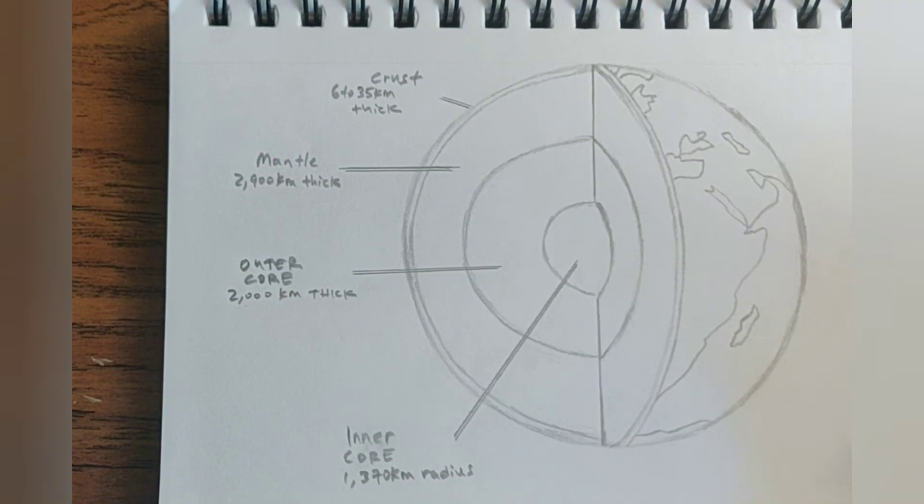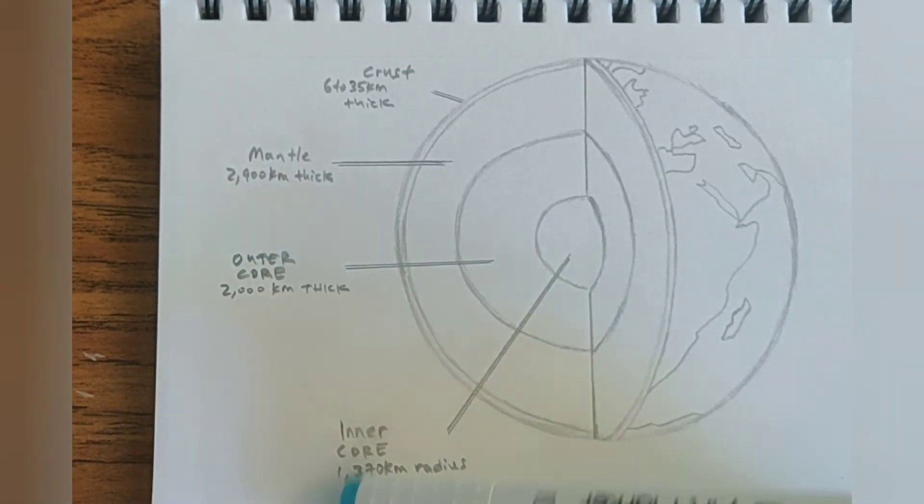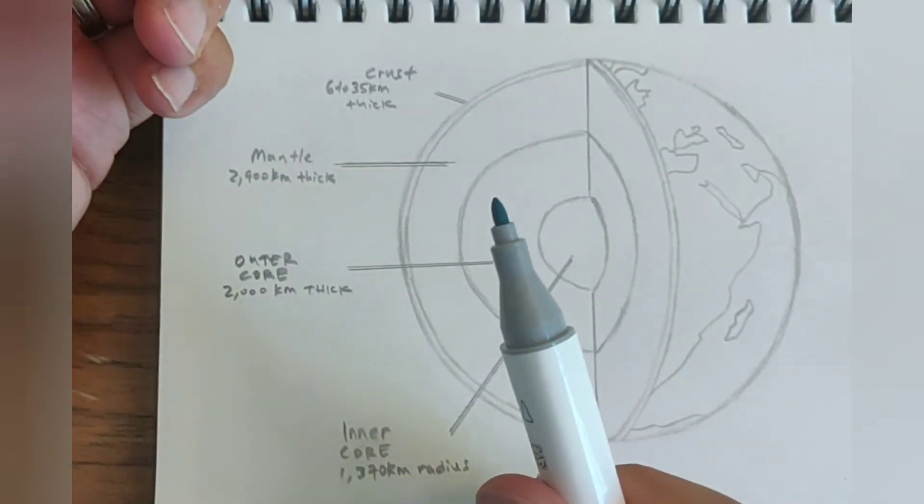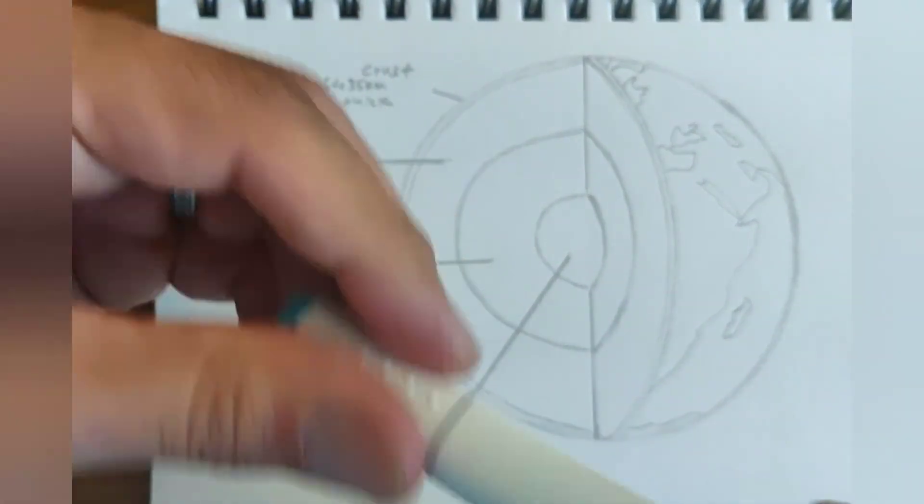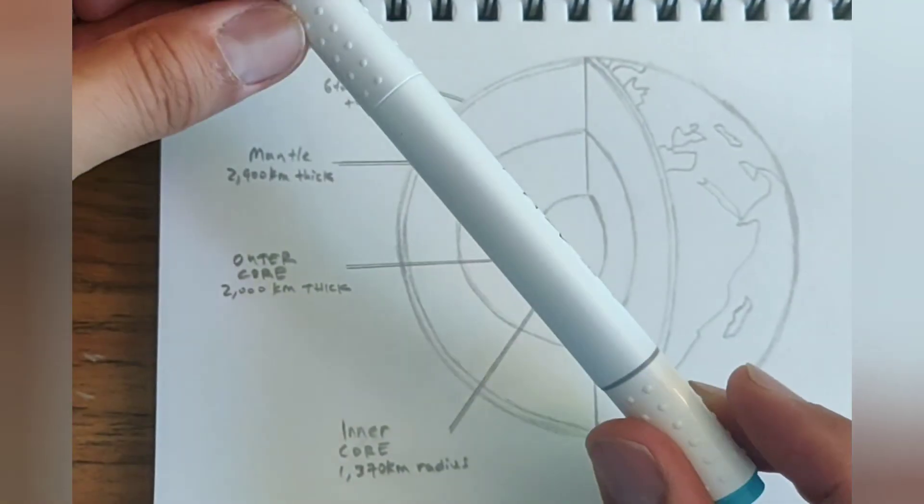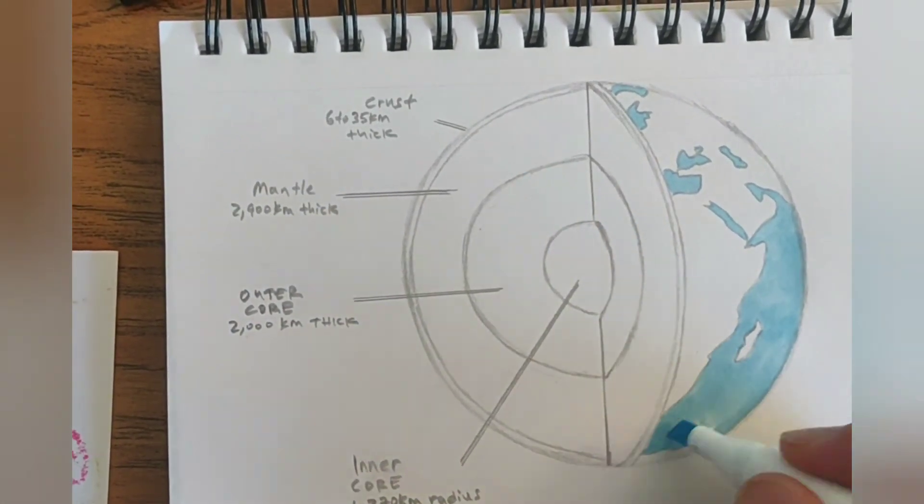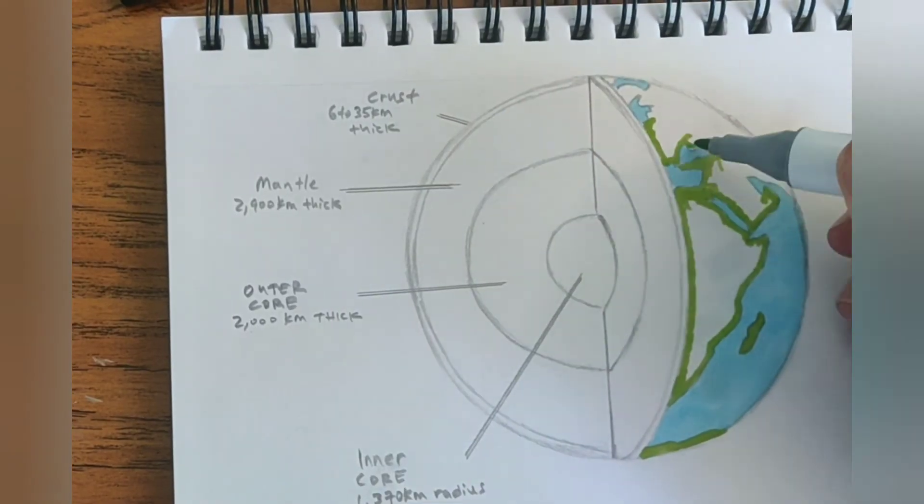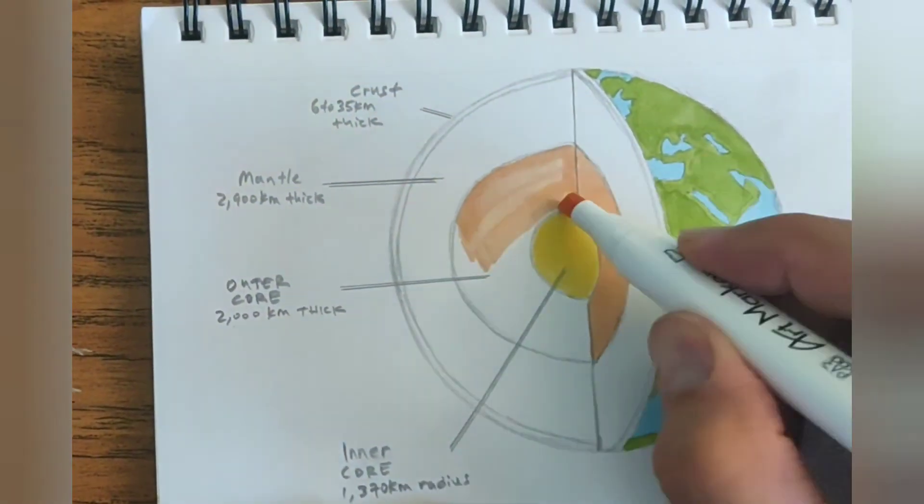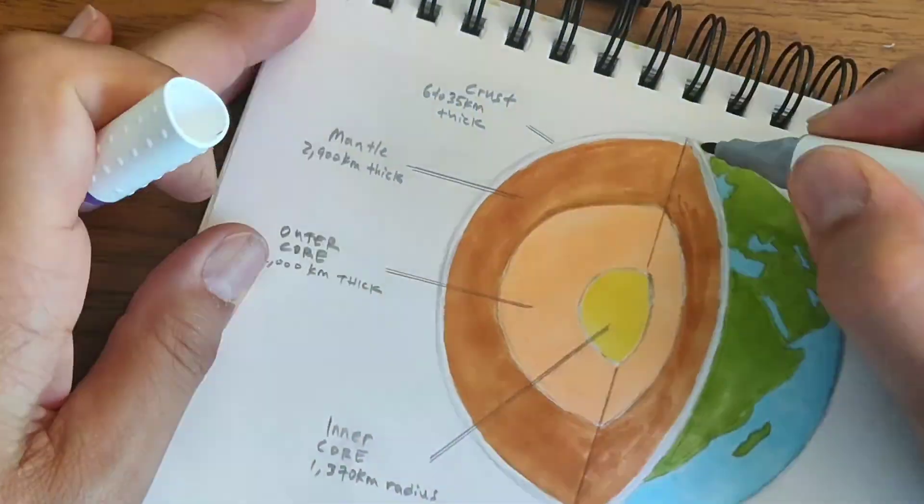I have some of these markers. I'll show you. These are Parko art markers. They're pretty good price. And they have two tips. They have this fine tip and then the broad tip here. So I'll probably use these markers.